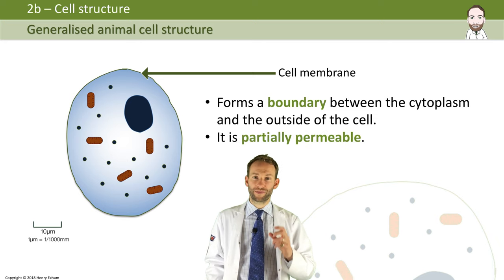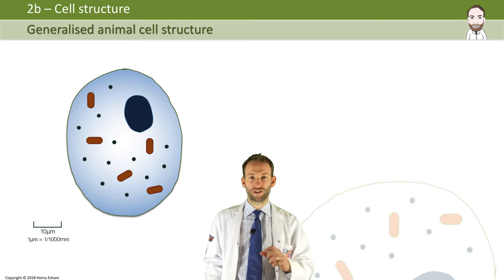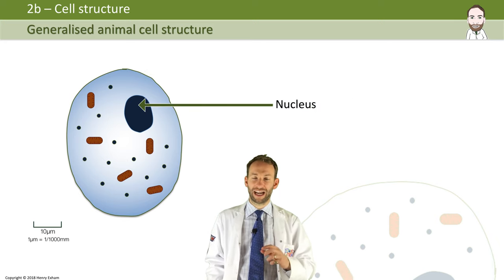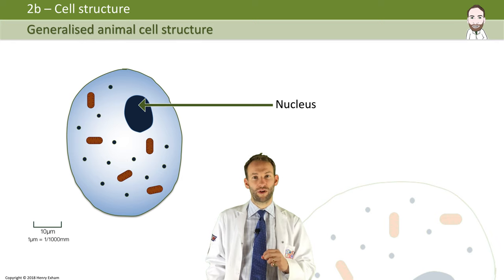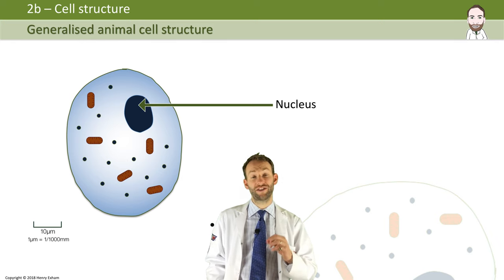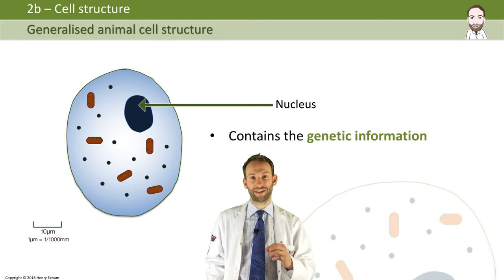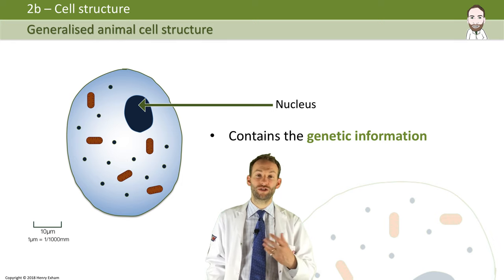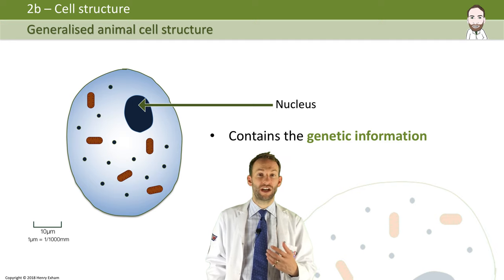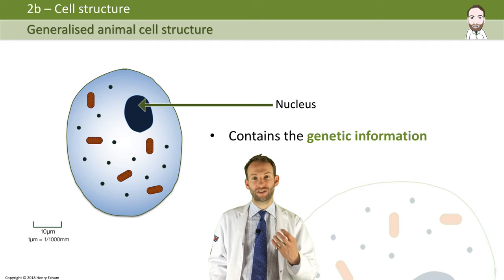The nucleus is the largest organelle — there's this dark spot within the cell — and that is where the genetic material, the DNA, is stored for the cell. The genetic material controls what the cell does, so really this is the control centre for the cell.